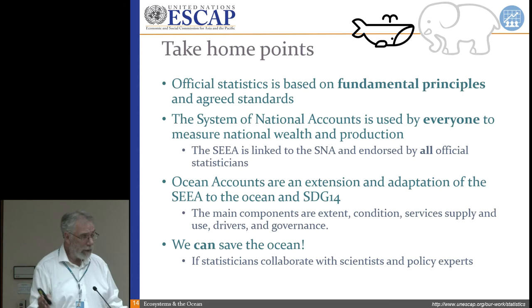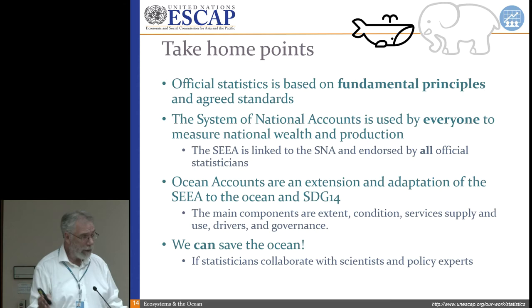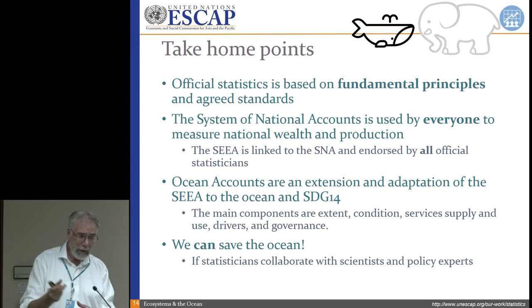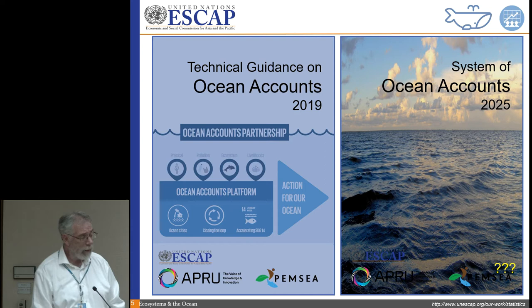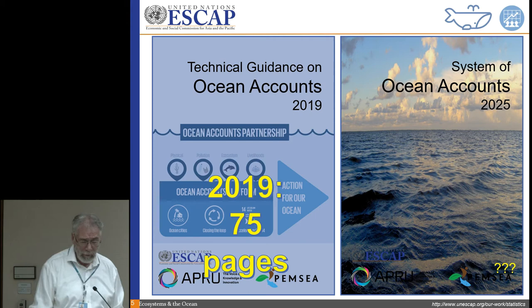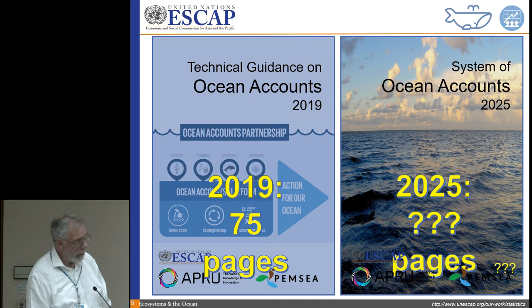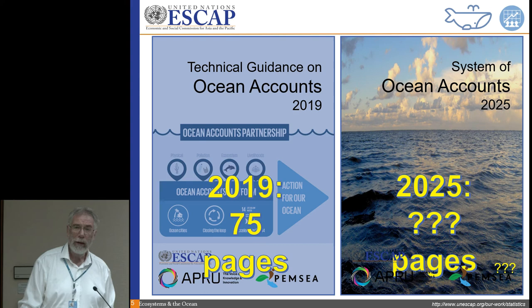I think together we can save the ocean, but it really takes the statisticians, the policymakers, and the scientists to work together on this. Next year we'll have a 2019 version of this that might be 75 pages or so. And by 2025, we would want an official document that says 'the System of Ocean Accounts.' Everybody has an opportunity to write a few of those pages between now and 2025. Thank you.